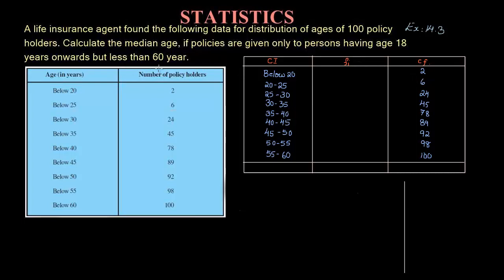This is the third question of Exercise 14.3 from the chapter Statistics of the NCRT Mathematics textbook. The question says: a life insurance agent found the following data for distribution of ages of 100 policyholders. Calculate the median age if the policies are given only to persons having age 18 years onwards but less than 60 years.